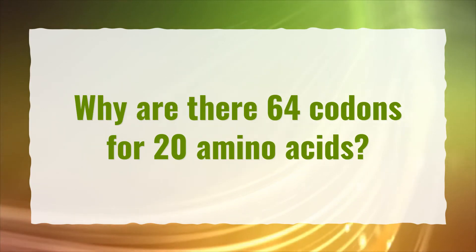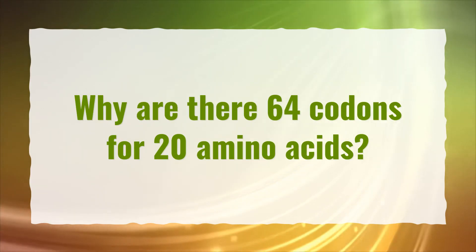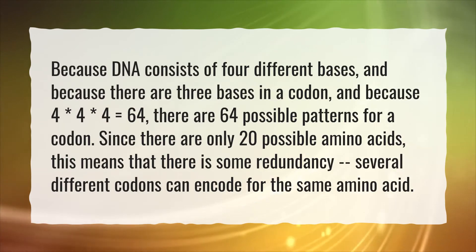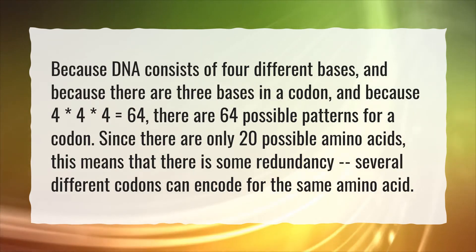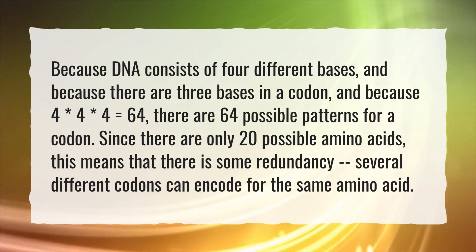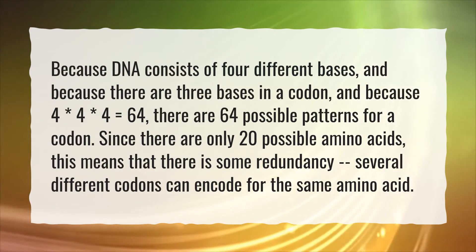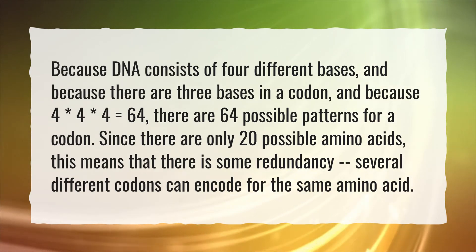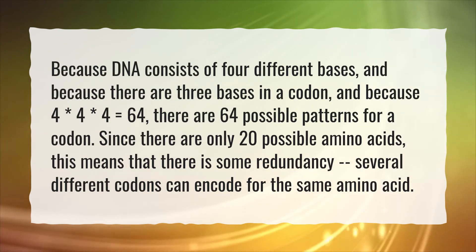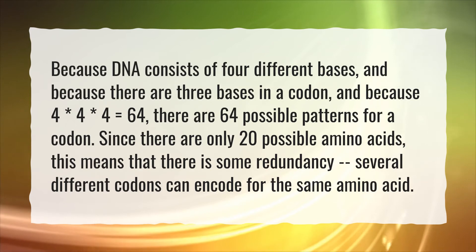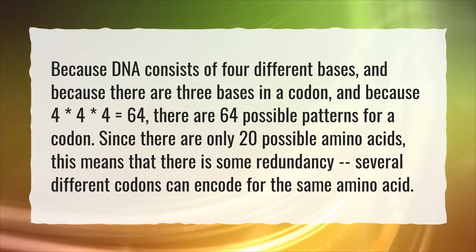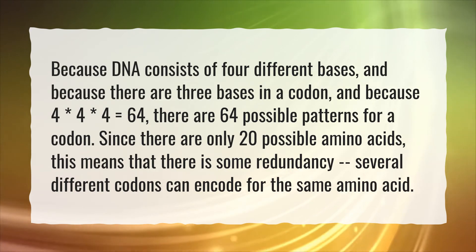Why are there 64 codons for 20 amino acids? Because DNA consists of four different bases, and because there are three bases in a codon, and because 4×4×4 equals 64, there are 64 possible patterns for a codon. Since there are only 20 possible amino acids, this means that there is some redundancy — several different codons can encode for the same amino acid.